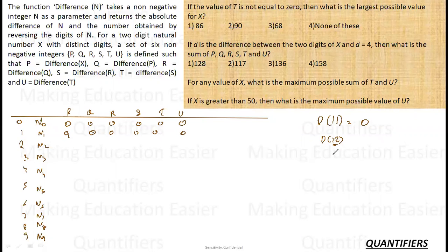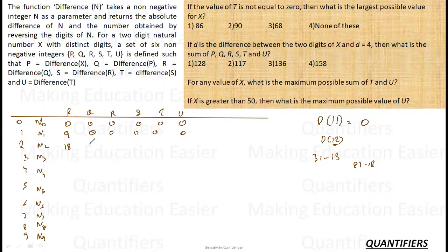If the digit difference is 2, take the number 13. Reverse is 31, so 31 minus 13 = 18. So p = 18. Then q = 81 minus 18 = 63. Then r = 63 minus 36 = 27. Then s = 72 minus 27 = 45. Then t = 54 minus 45 = 9. And then u = 0.